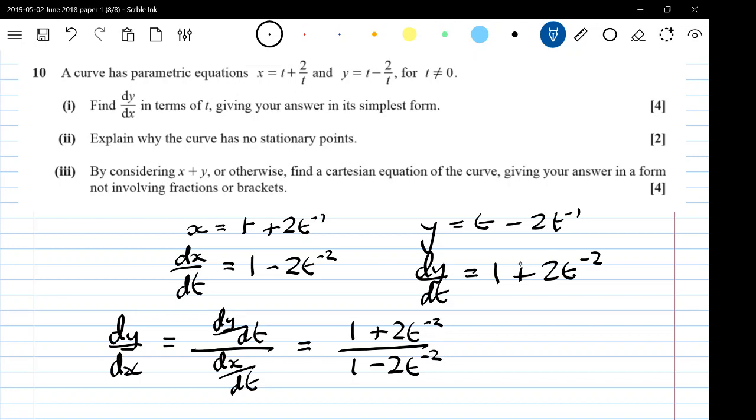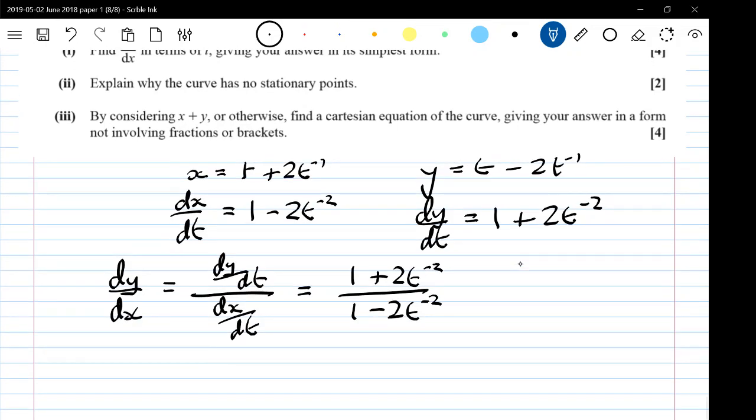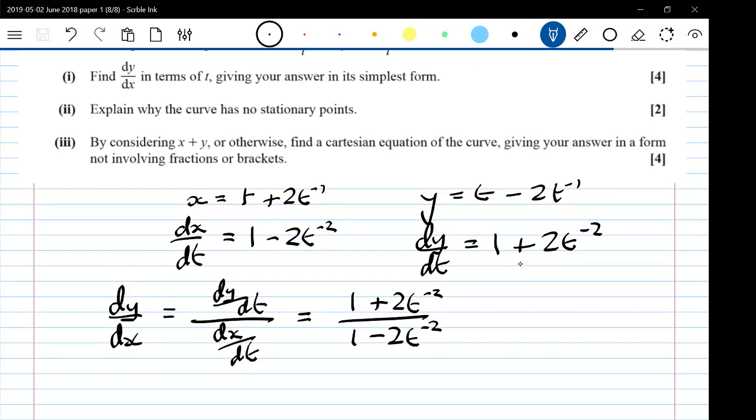I'm afraid they weren't happy with it in that form. They wanted it in its simplest form and they didn't view that as being the simplest form. If you think about what we've got there, we've got 1 plus 2 over t squared and 1 minus 2 over t squared.